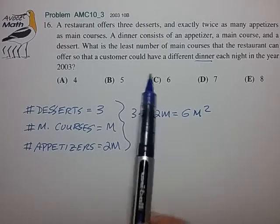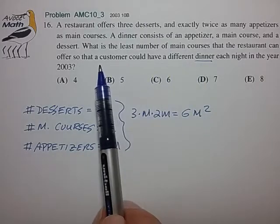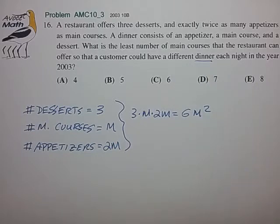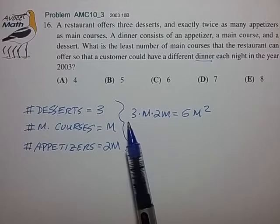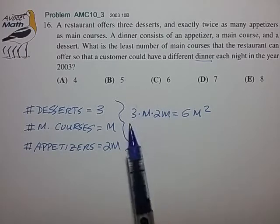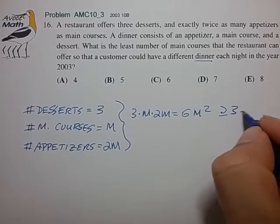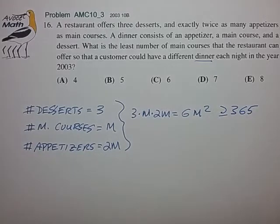And now we're going to subject this to the condition that we want the customer to have the ability to have a different dinner each night of the year. And so what that essentially means is that we want the total number of compound sets that we're forming here to be greater than or equal to the number of days in the year, 365.